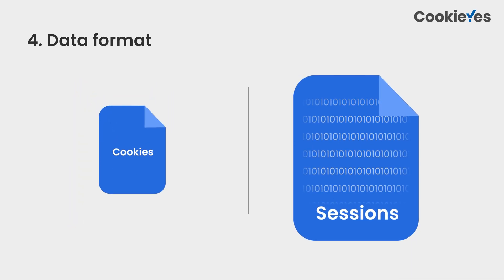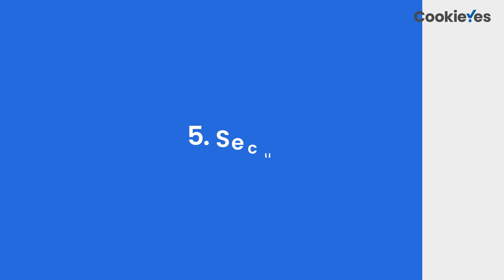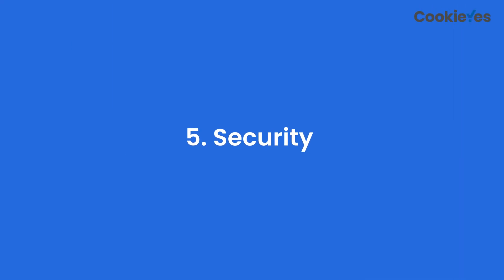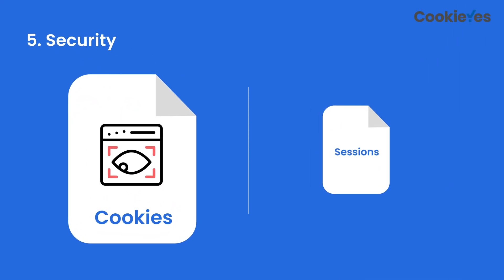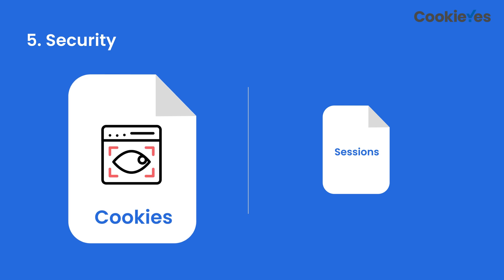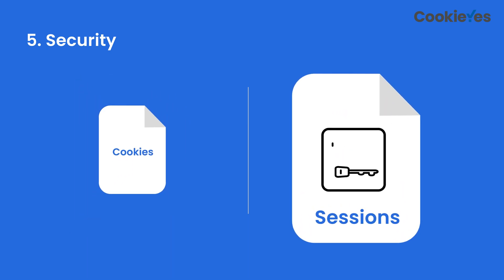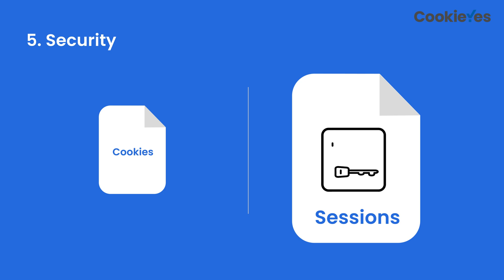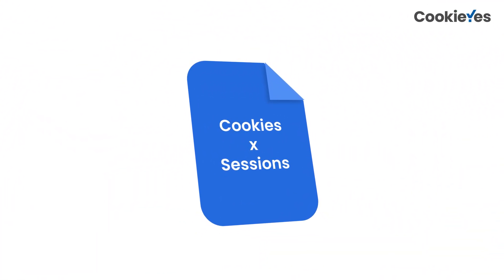The next difference is the format in which both store data. Cookies use text files to store information, and sessions store data in binary or encrypted form. For this reason, cookies are less secure than sessions, as the text files stored on the client side can be read by anyone who gets unauthorized access to the device. The encrypted data stored by sessions can only be decrypted at the server.